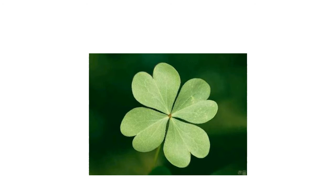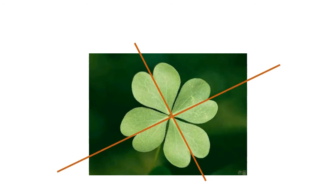Now here with the clover plant, if I try to divide it into two parts, I can do it in two ways — one way is this and the other way is this. These two lines are dividing the clover plant into two equal parts, and both parts made by these lines are identical and similar to each other.